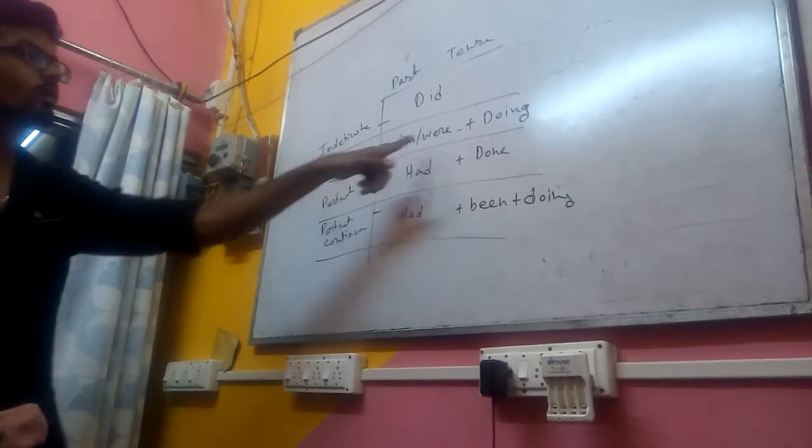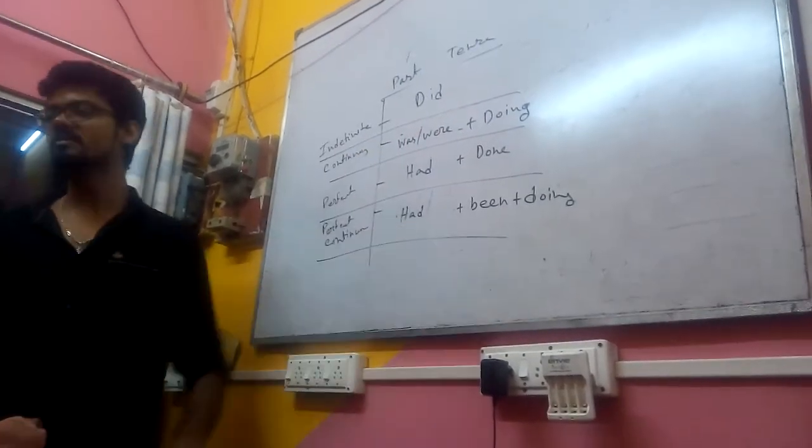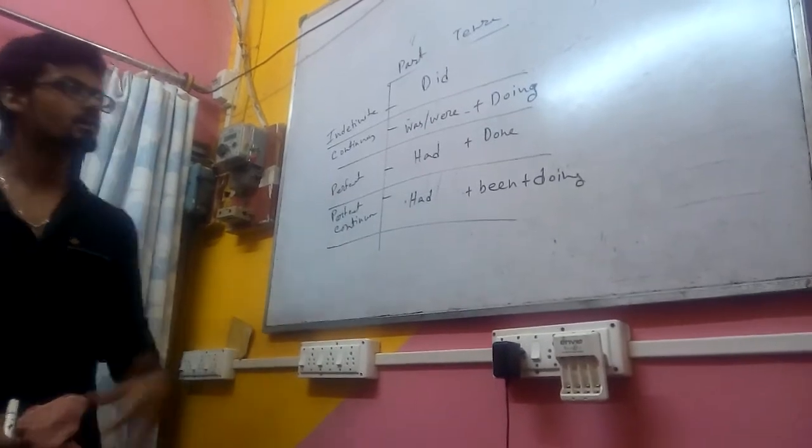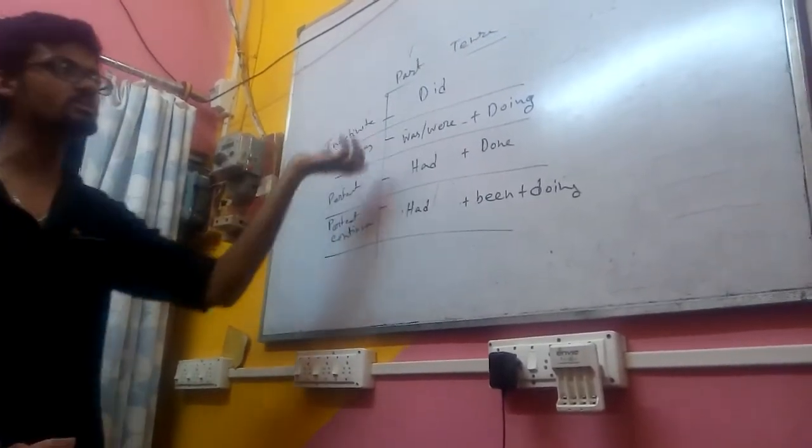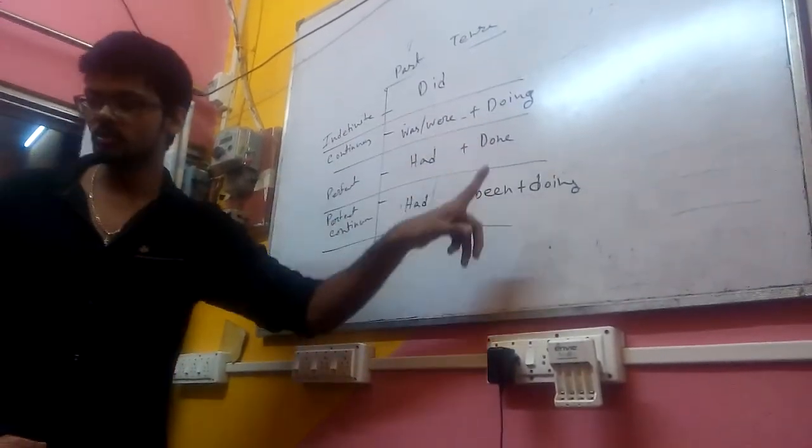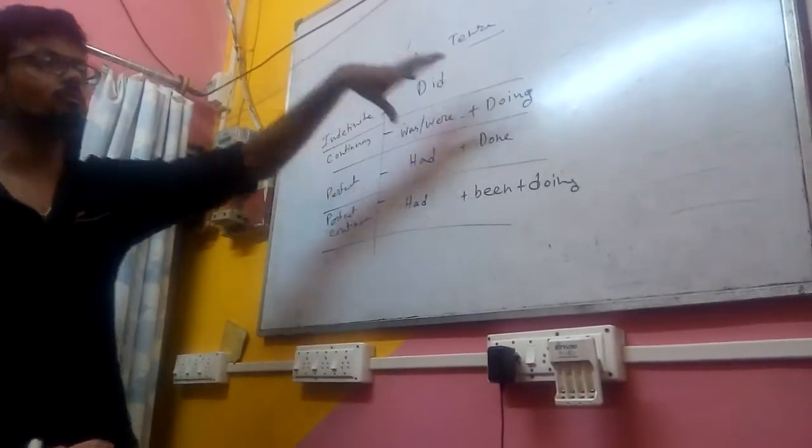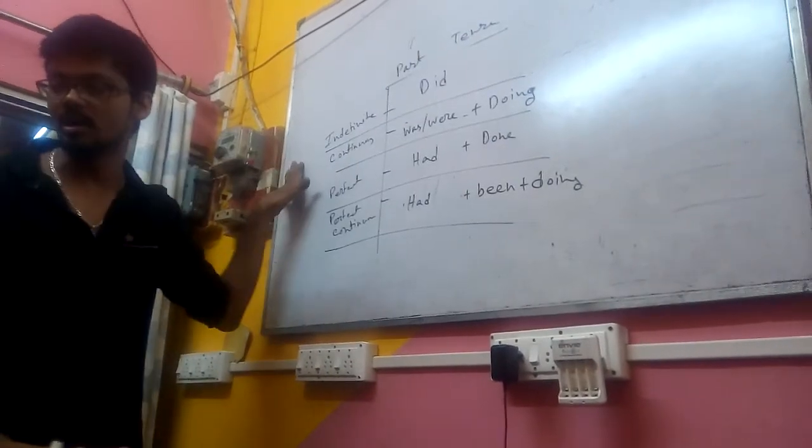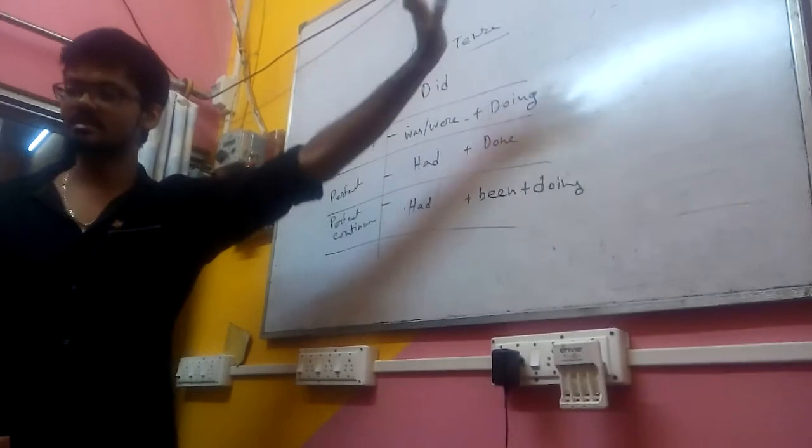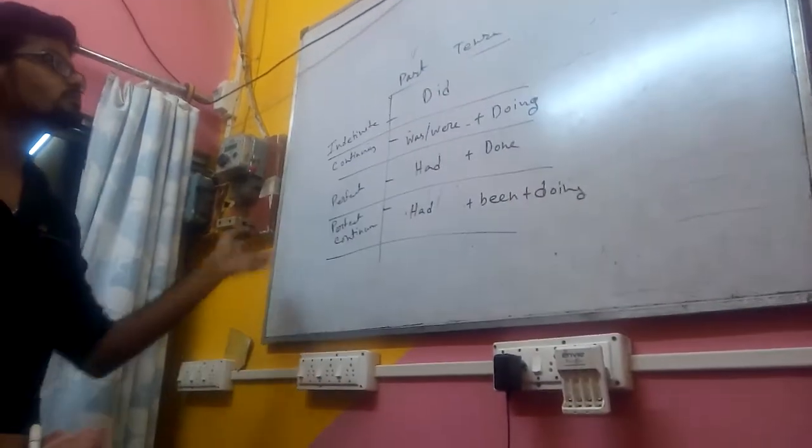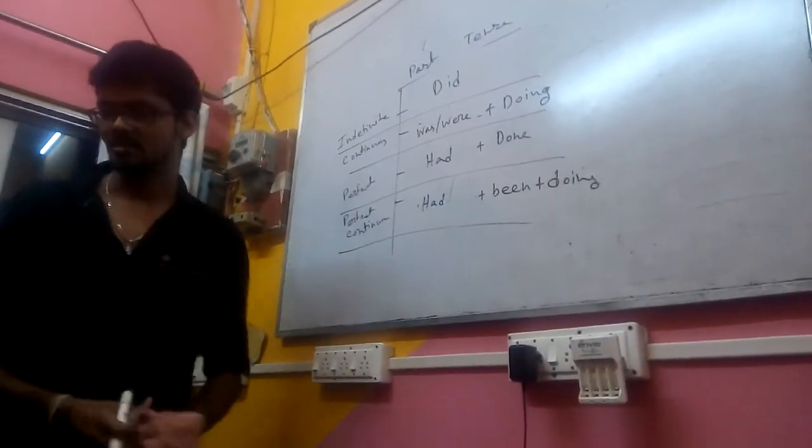Now: I did, I was doing, I had done, I had been doing. If we take the auxiliary in front of the subject, it becomes a yes/no question. If we add a WH word in front of the auxiliary, then auxiliary, then subject, then other elements, it becomes a WH question.